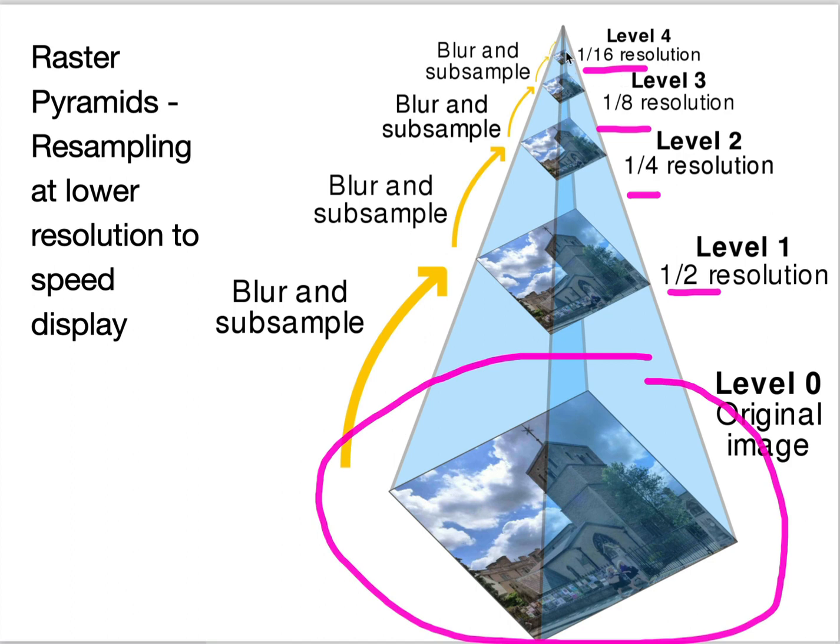So if I have a screen that's a thousand pixels, I find that the eighth resolution has a thousand pixels across. That's what I display and I have to show a lot less data and I don't have to sample. I just paint everything across instead of calculating where to pull the data from.